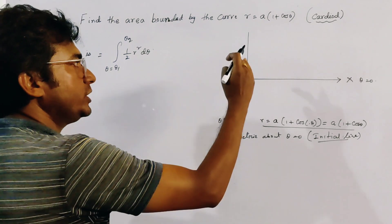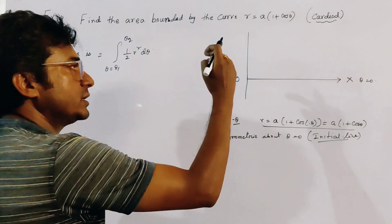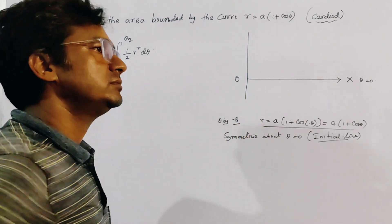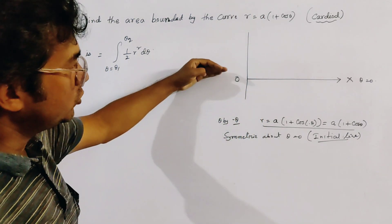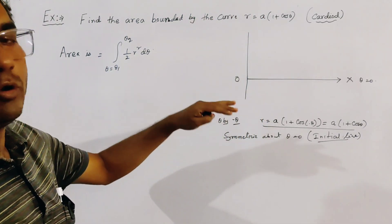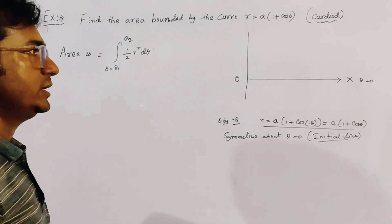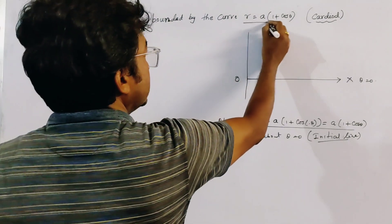So if we draw a graph of this cardioid above the initial line, then it will be the same below the initial line.